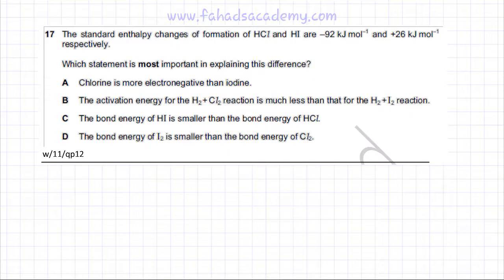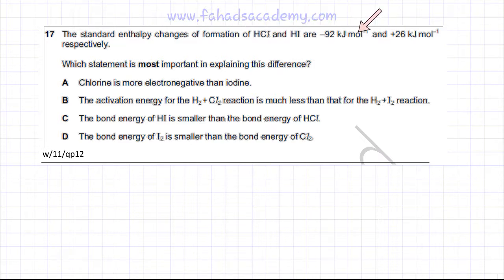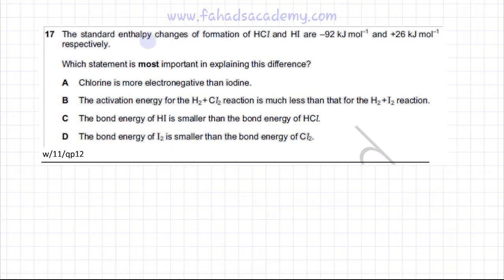This chemical energetics question is related to bond energies. The question states that the standard enthalpy changes of formation of HCl and HI are minus 92 kJ per mole and plus 26 kJ per mole respectively. The standard enthalpy changes of formation of both HCl and HI are being considered.